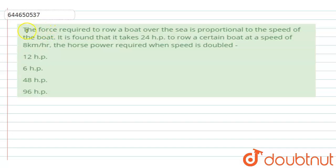The given question is: the force required to row a boat over the sea is proportional to the speed of the boat. It is found that it takes 24 hp, where hp is horsepower, to row a certain boat at a speed of 8 kilometers per hour. Find the horsepower required when the speed is doubled.